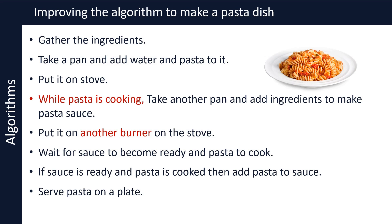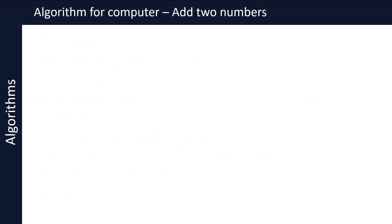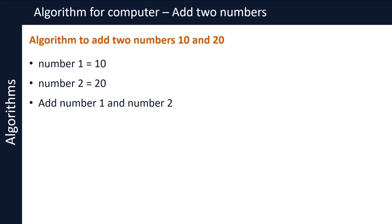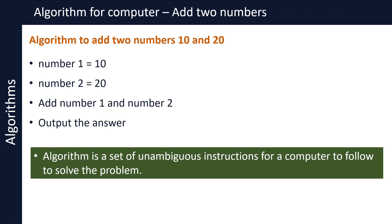So far we have looked at algorithms that could be followed by humans. Now let's turn our attention to algorithms for computers. Let's write a simple algorithm to add two numbers: 10 and 20. The steps are: set number 1 to 10; set number 2 to 20; add number 1 and number 2; output the result, which is the result of adding 10 and 20. This algorithm is nothing but a set of unambiguous instructions for a computer to follow to solve the problem of adding two numbers.